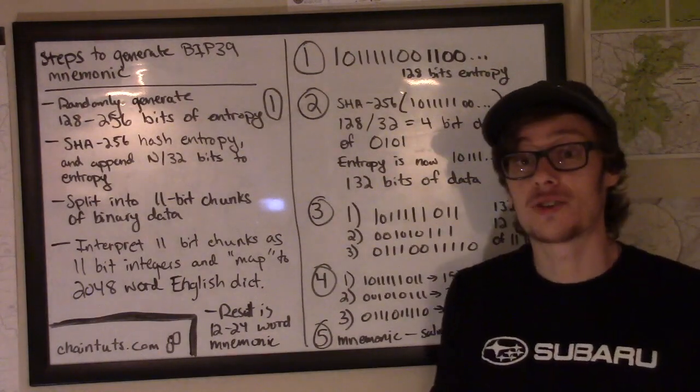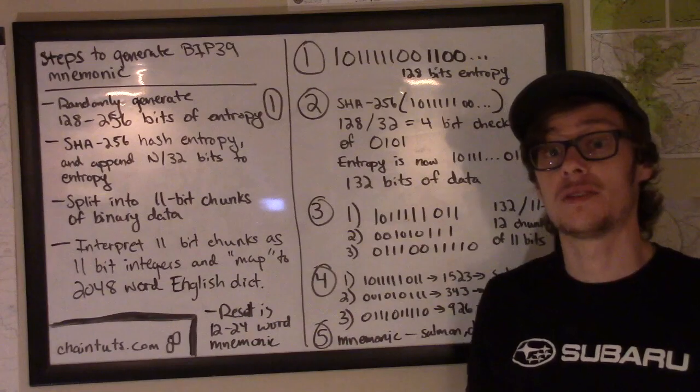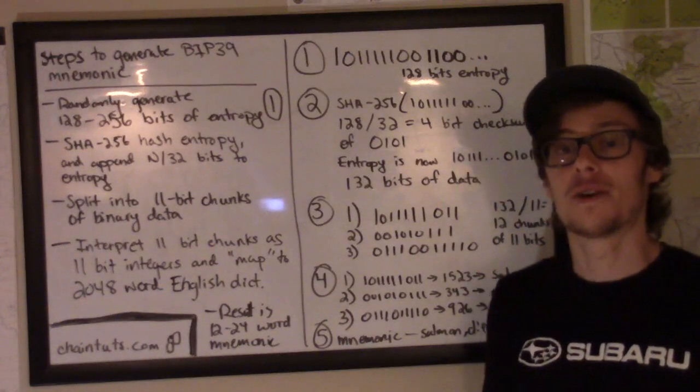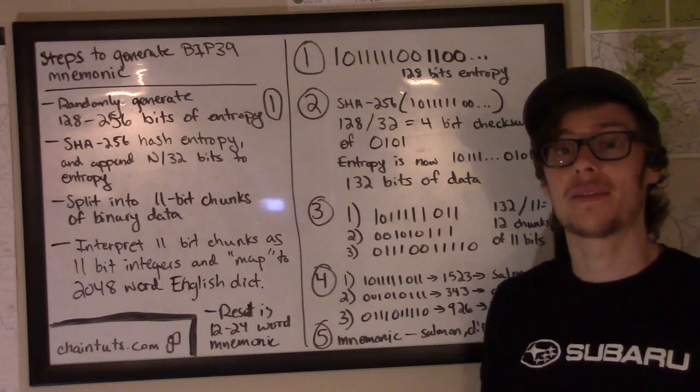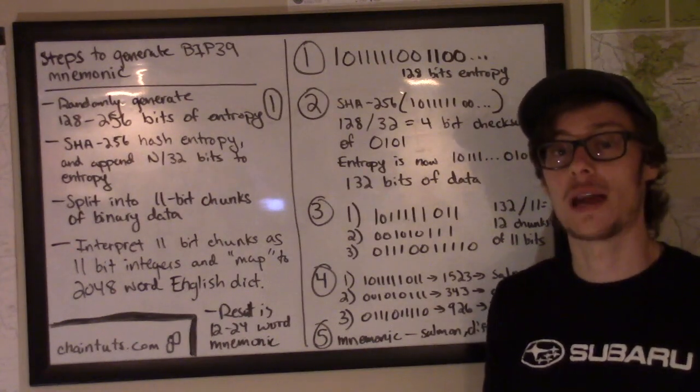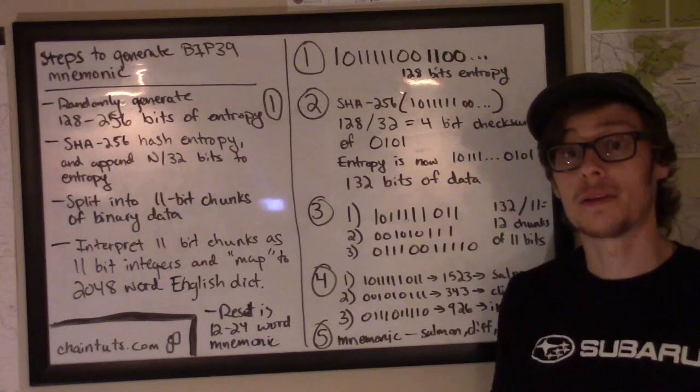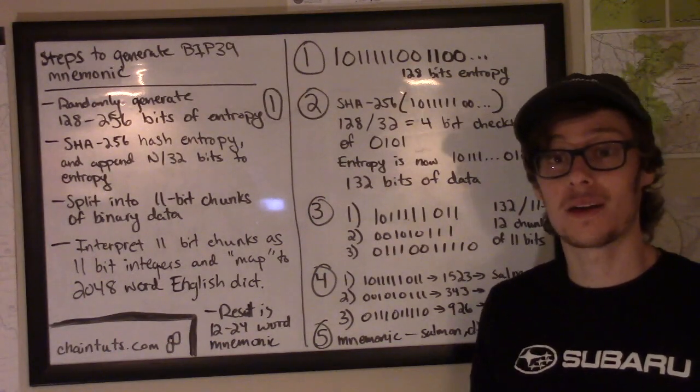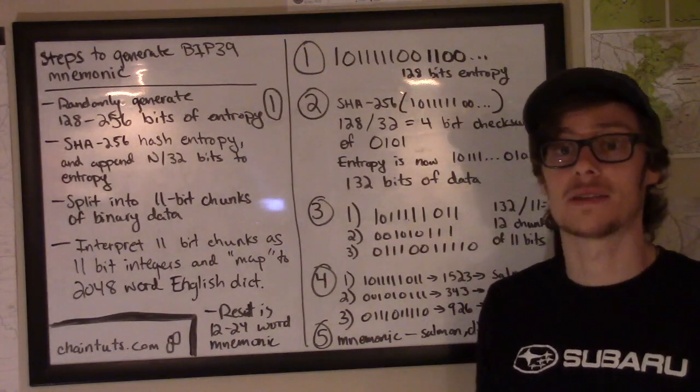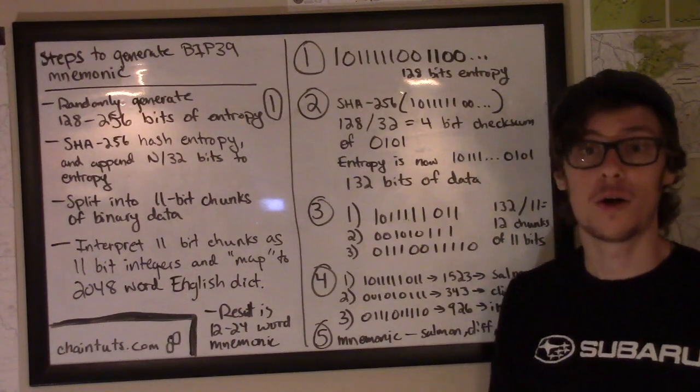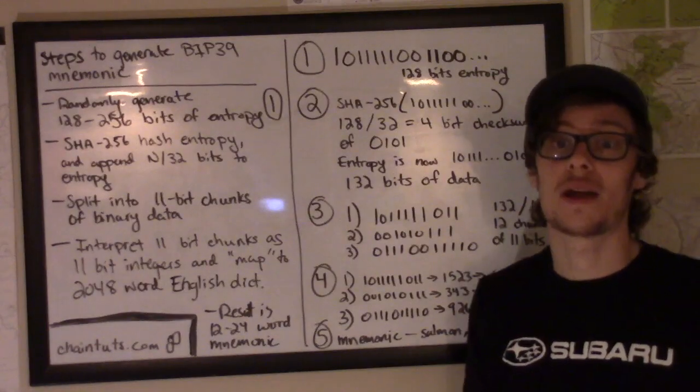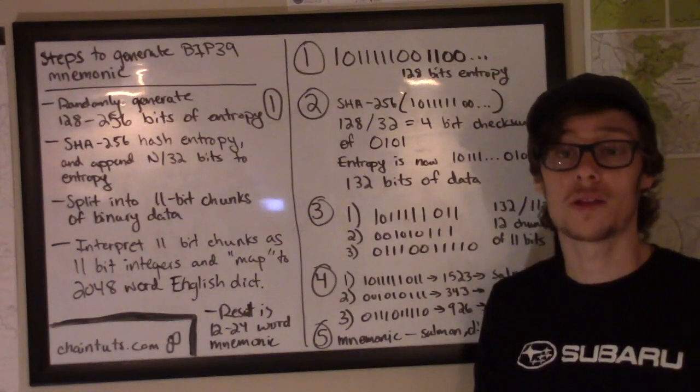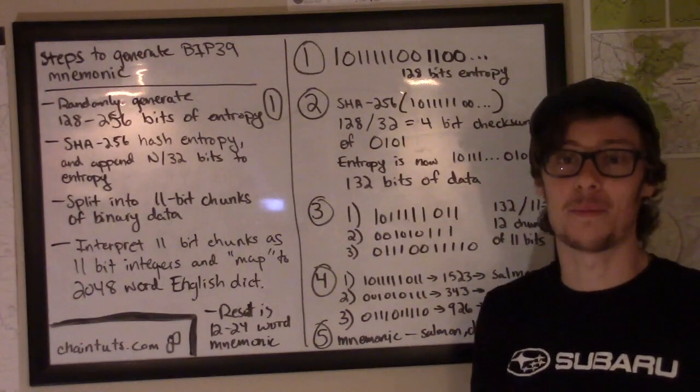As well, if you're interested on our GitHub at chaintuts as well as Josh McIntyre, there's a mnemonic generator written in Python. This is a command line tool that will automatically generate a mnemonic for you. Keep in mind that this is an academic piece of software. It's not designed to necessarily be cryptographically secure, although I do try to follow best practices. So if you want to play around with generating mnemonics and not use a wallet software, you can check out that piece of code.